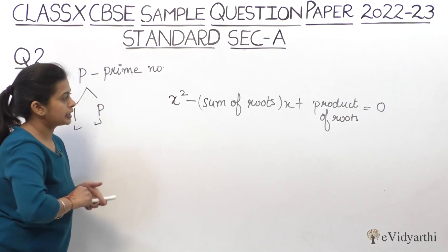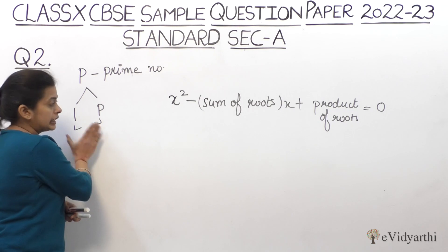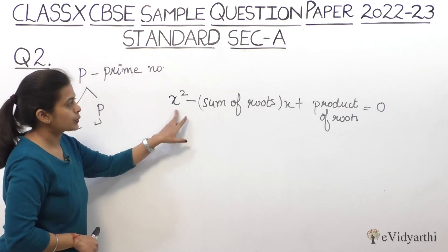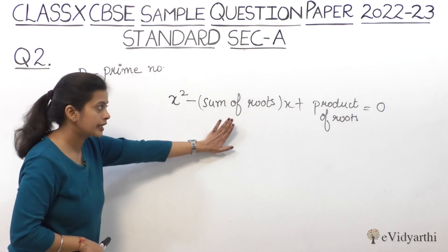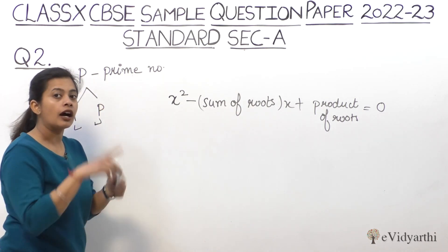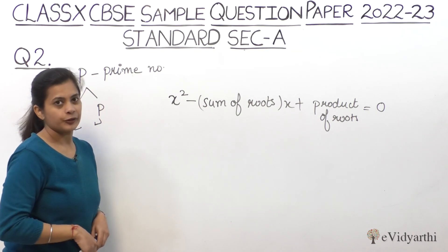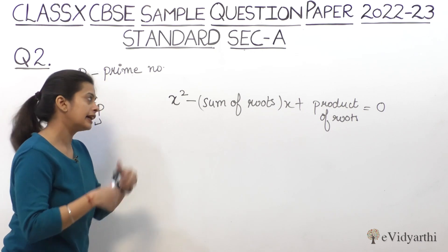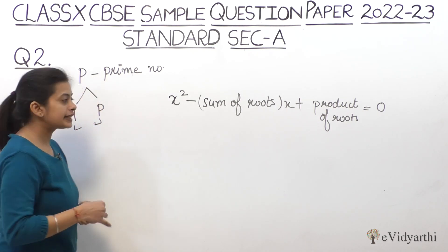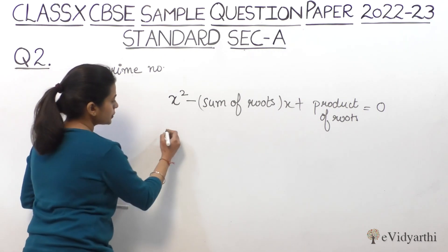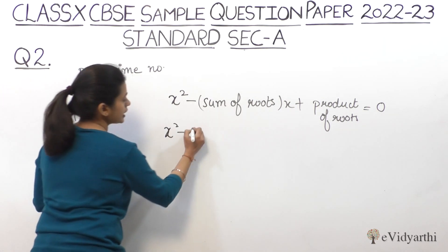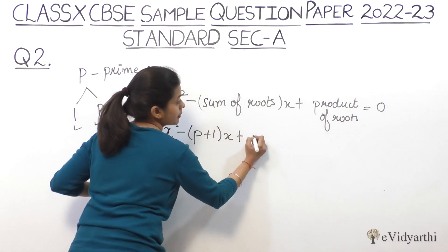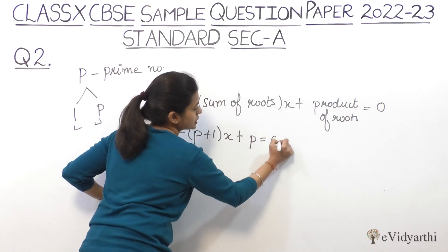Now let's see, if I have factors as our roots, what will happen? x² minus sum - that's p plus 1 - into x, and the product is p times 1 which is p. So our equation is: x² minus (p+1)x + p = 0. This is my quadratic equation.